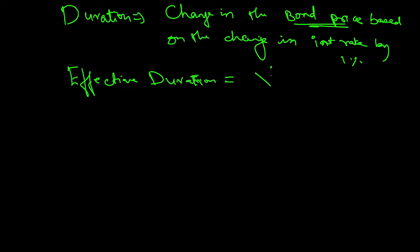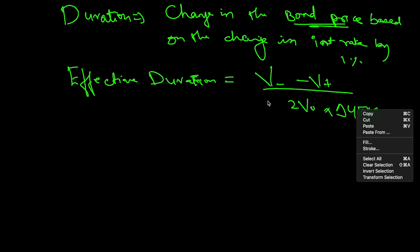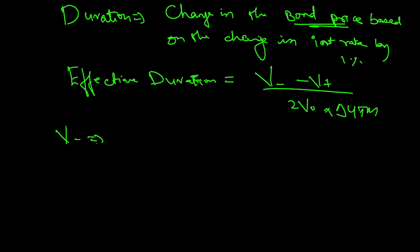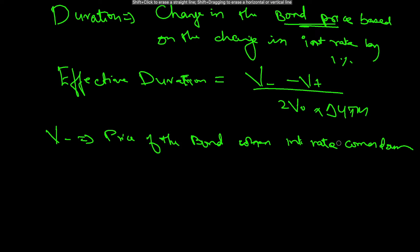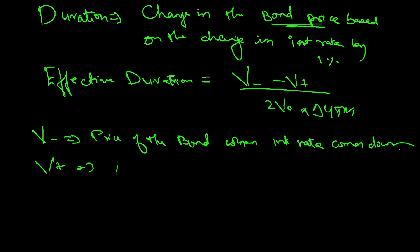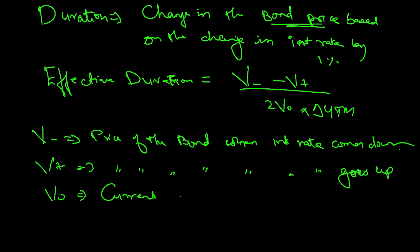The formula for effective duration is an approximate one and goes like this: V-minus minus V-plus, divided by 2 times V-zero times delta YTM. V-minus refers to the price of the bond when interest rate comes down, V-plus refers to the price of the bond when interest rate goes up, and V-zero refers to the current price of the bond.